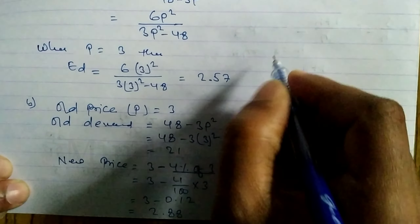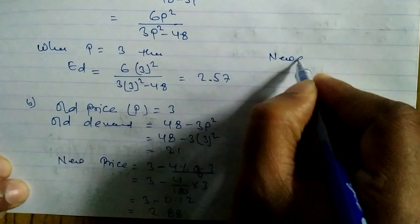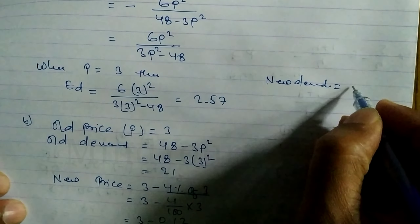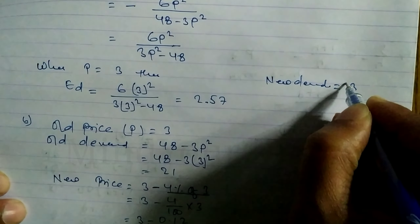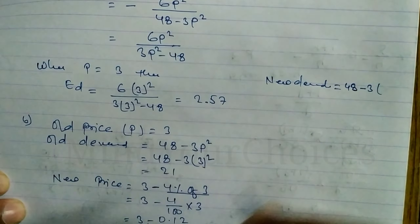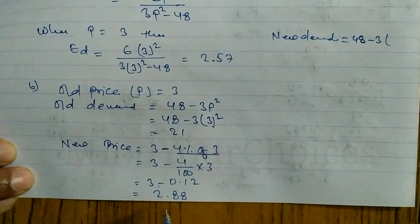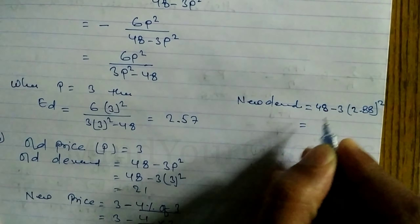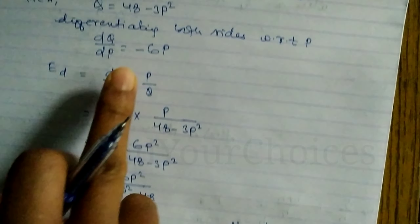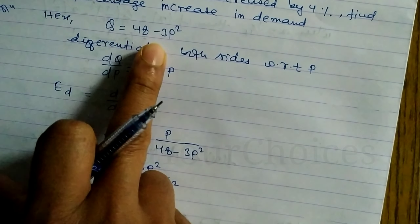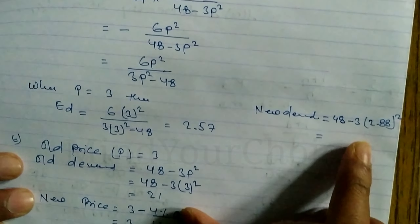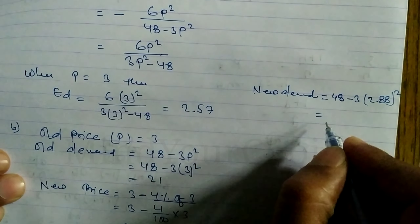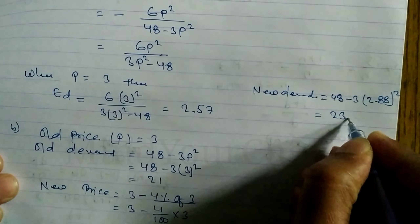Now calculating new demand using the demand function Q = 48 - 3p². Substituting the new price p = 2.88: Q = 48 - 3 × (2.88)². Calculating this gives new demand = 23.12.